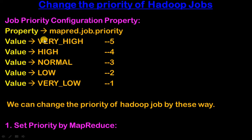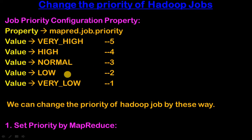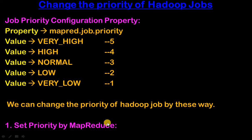If we specify the value 'VERY_HIGH', the priority of the job is 5, meaning top priority. If we specify 'HIGH', the priority is 4. Similarly, 'NORMAL' maps to 3, 'LOW' maps to 2, and 'VERY_LOW' maps to 1. This is how we set the priority using the mapred.job.priority property.